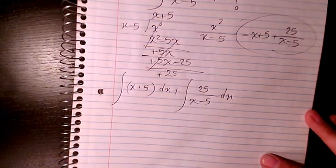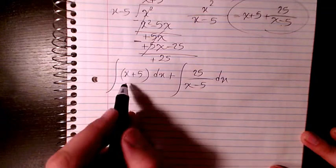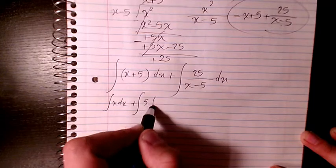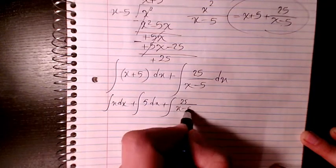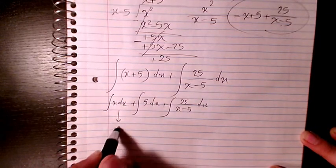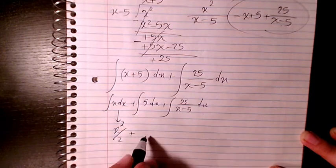So what I can do is find the integration. It will be x dx plus 5 dx plus 25 divided by x minus 5 dx. So the integration of this one will be x squared divided by 2, the integration of this one will be 5x.